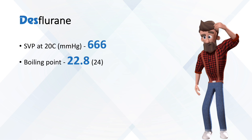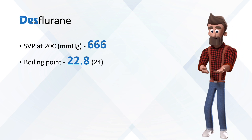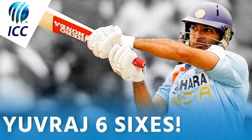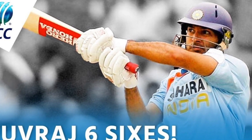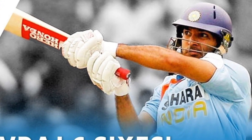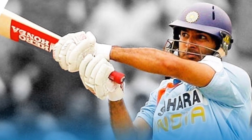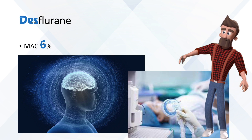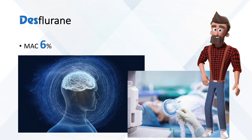The boiling point is 22.8 degrees. To remember it easily, we can approximate it as 24, which is 4 times 6. And the volatile agent desflurane has a MAC value of 6% — this one is straightforward.